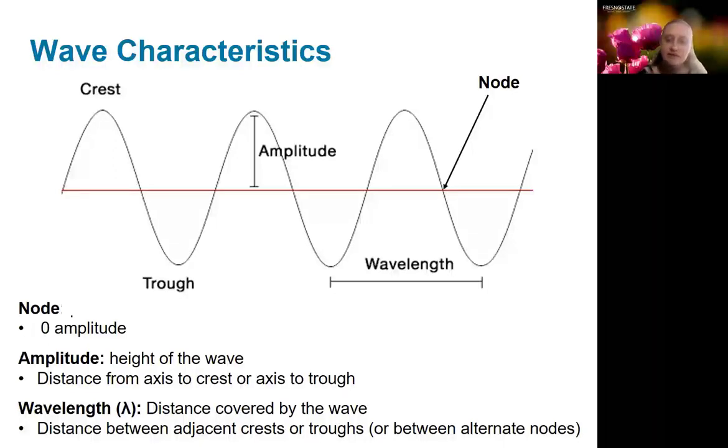And then finally we also can talk about the wavelength, which is the distance between two equivalent points on the wave. Usually this is discussed as the distance between adjacent crests, adjacent troughs, or alternating nodes.